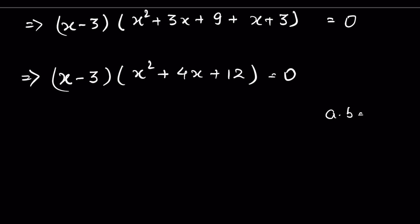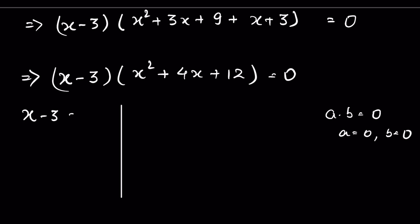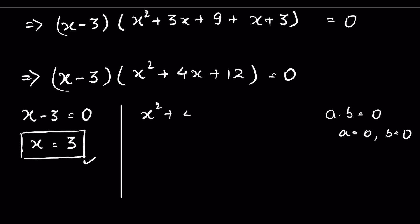When a × b = 0, either a = 0 or b = 0. So when x - 3 = 0, x = 3. This is one real solution. The second factor gives x² + 4x + 12 = 0, a quadratic equation.